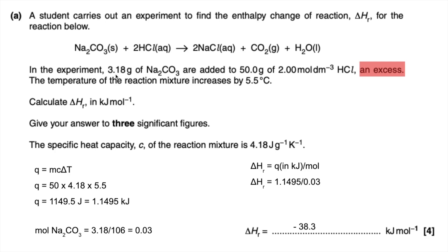The wording in the question isn't fantastic — it hasn't said to ignore the increase in mass when the 3.18 grams goes into the 50 grams of acid. So technically m is actually 53.18 grams. If you've used that in your Q calculation that's fine, and you should have got an answer of minus 40.8 kilojoules per mole — that would be full marks as well.